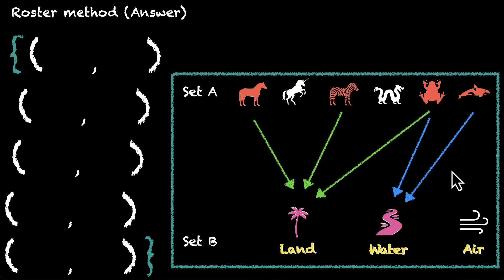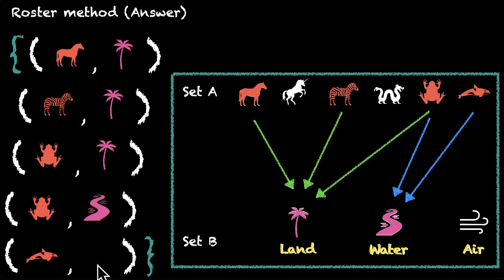four, and five. The first one is horse and land. Second one is zebra and land. And then we have frog and land and then frog and water and then fish and water. Okay. This covers up our relation.